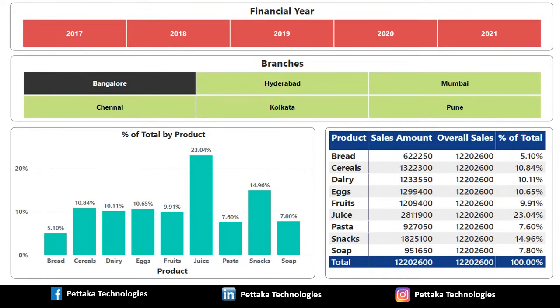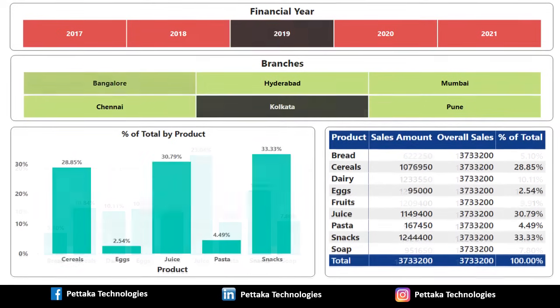Based on the selection of slicer, percentage of total is calculated now only for Bangalore branch. We can also select both slicers and see the changes. We have selected 2019 in year slicer and Kolkata in branch slicer. Percent of total is displaying only for available data related to the slicer selections. Let's see how to calculate percent of total in Power BI and visualize the output data in this report format.